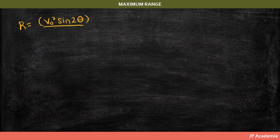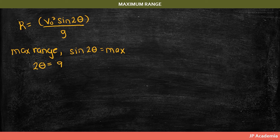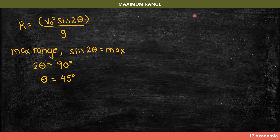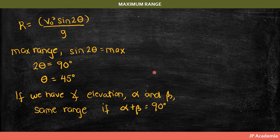Given an initial velocity, the maximum range results when sine 2 theta is at its maximum. This occurs when 2 theta equals 90 degrees, since sine 90 gives a value of 1. Therefore, theta should equal 45 degrees to achieve maximum range in this simple projectile scenario. In addition, if we have two angles of elevation, alpha and beta, they will result in the same range if they are complementary angles that add up to 90 degrees.